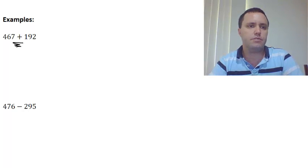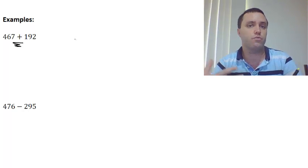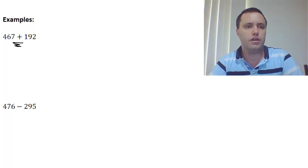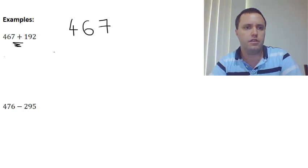Okay, so when you see these numbers like this, the first thing you need to do is you want to rewrite them. Okay, so step one, well, step one, rewrite them, and you want to line them up in their place value. So we'll have 467 plus 192.